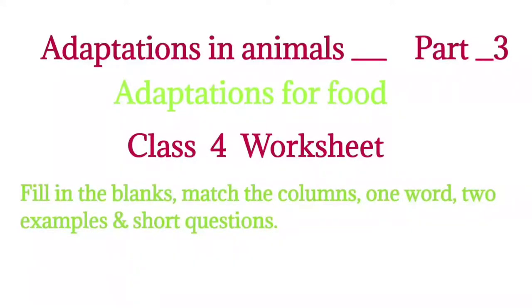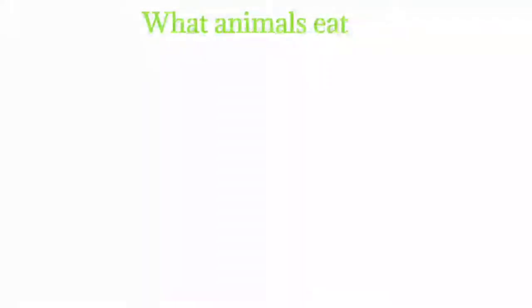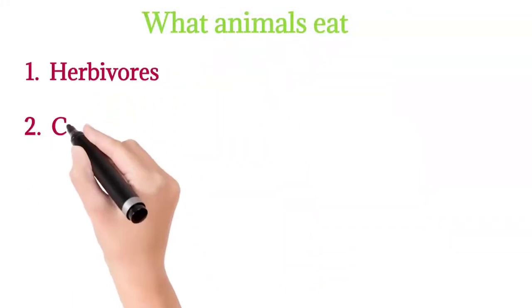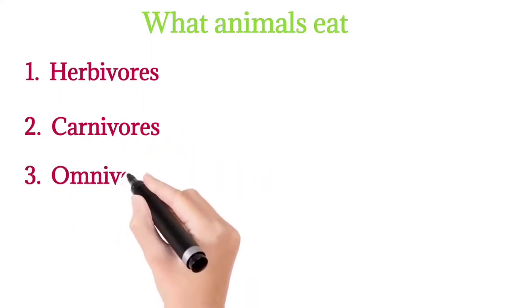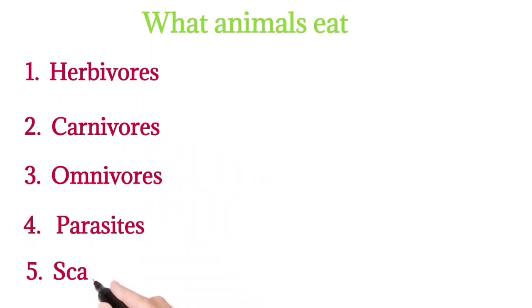What do animals eat? Different animals eat different types of food. Based on the type of food they eat, animals can be divided into different types: herbivores, carnivores, omnivores, parasites, and scavengers. I will give more explanation throughout my video.